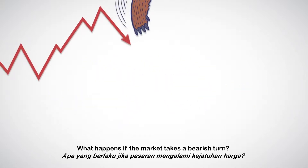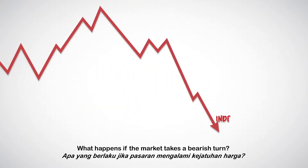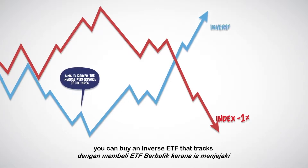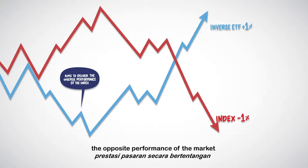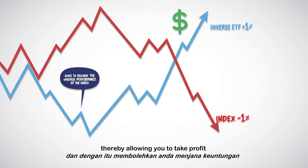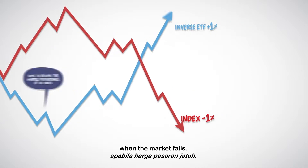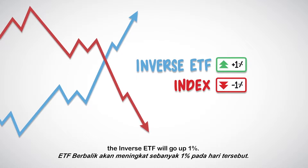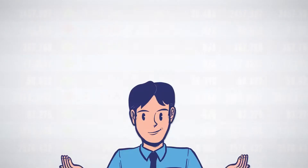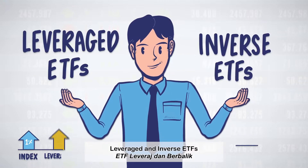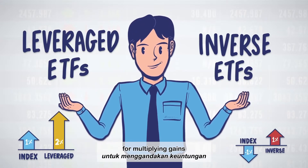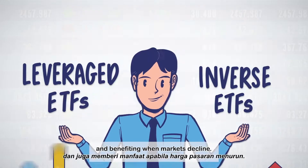What happens if the market takes a bearish turn? To capitalize on a falling market, you can buy an inverse ETF that tracks the opposite performance of the market, thereby allowing you to take profit when the market falls. In other words, if the market declines by 1% on any given day, the inverse ETF will go up 1%. There is no doubt that leveraged and inverse ETFs give traders many viable alternatives for multiplying gains and benefiting when markets decline.